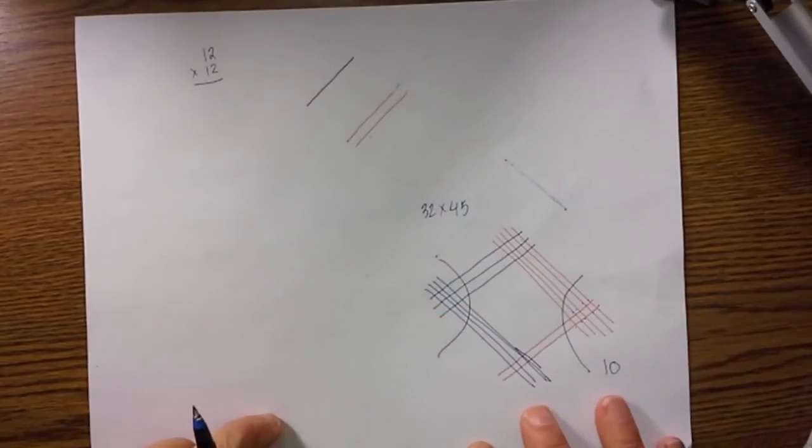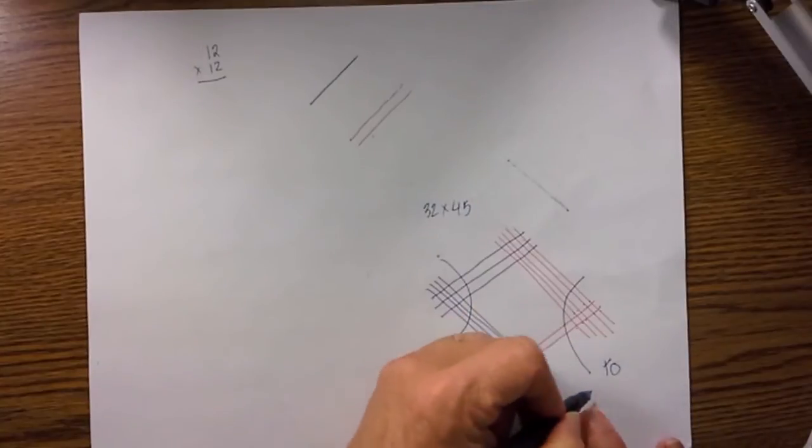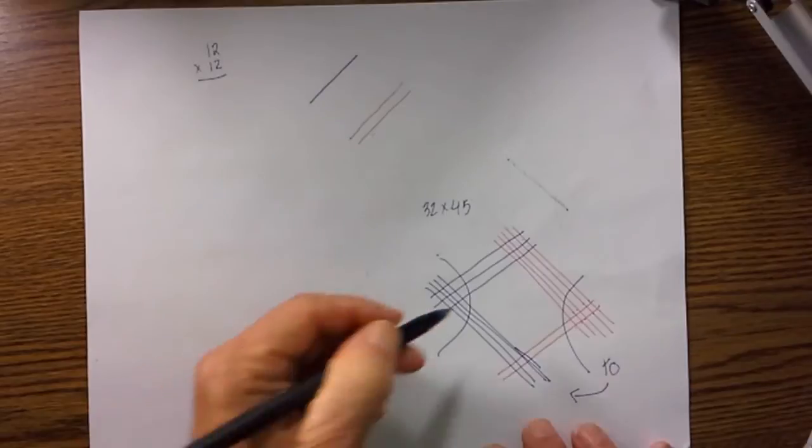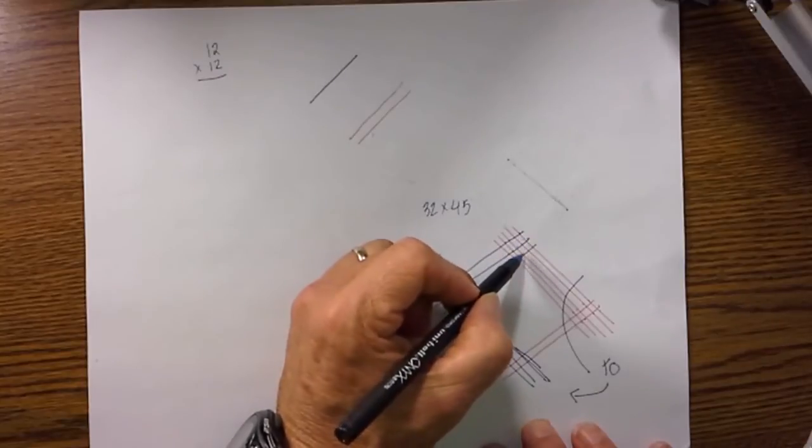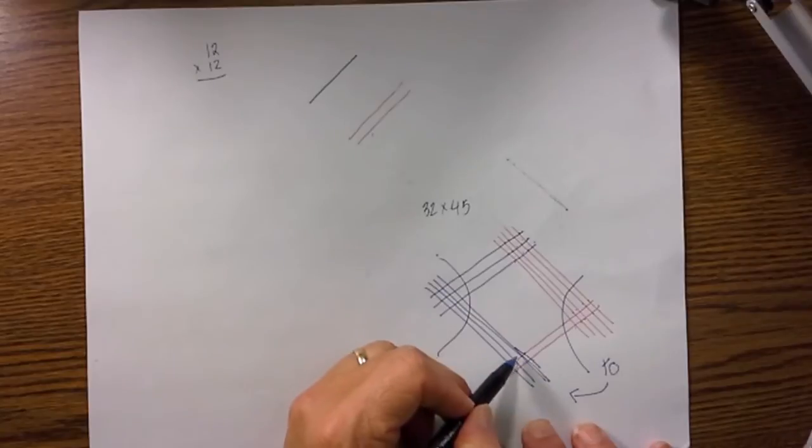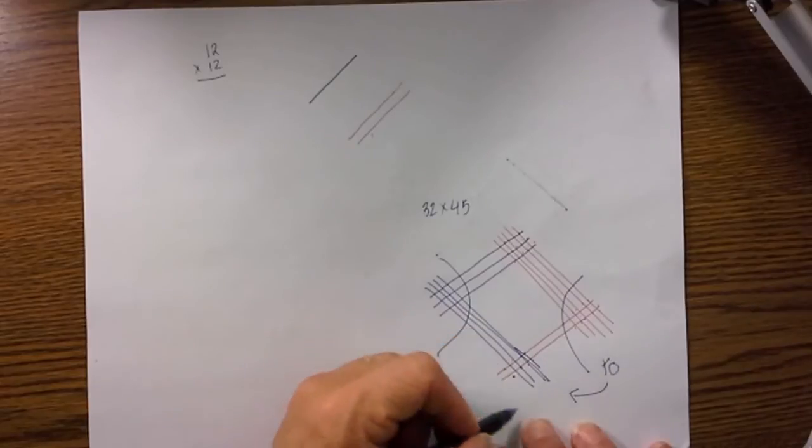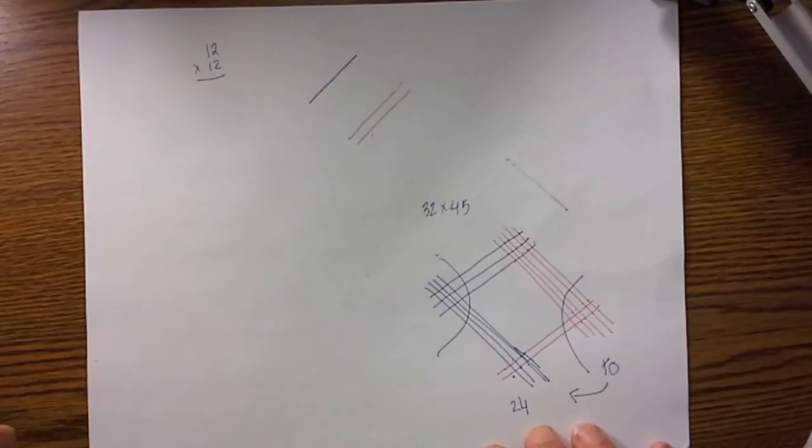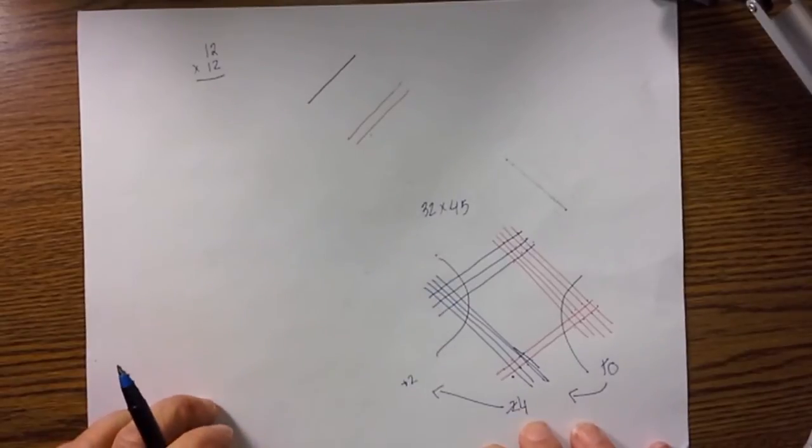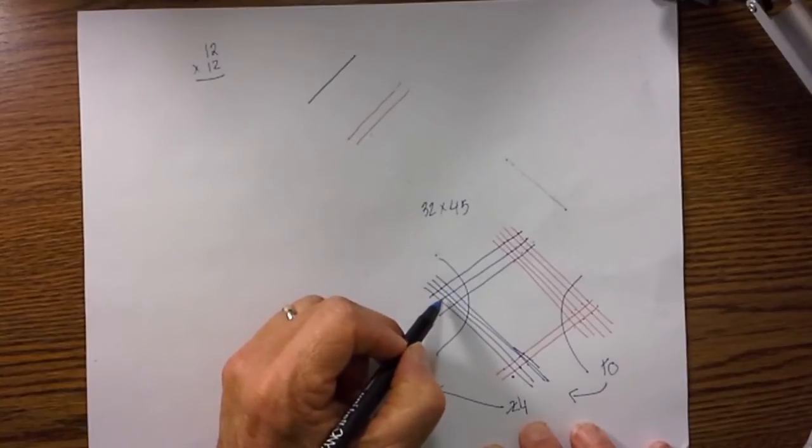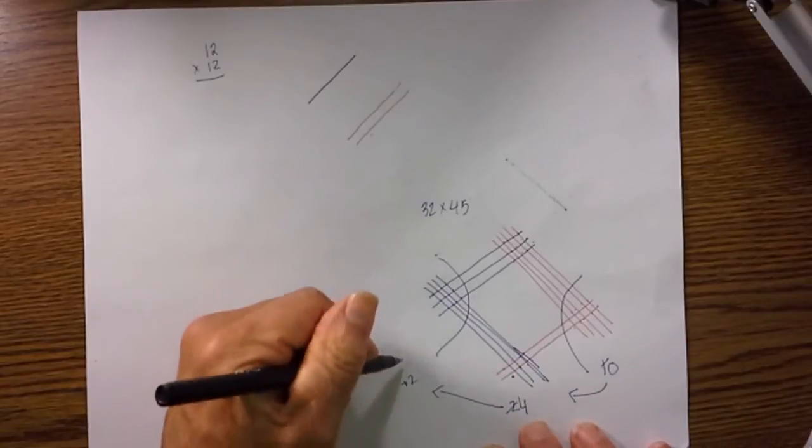So I count one, two, three, four, five, six, seven, eight, nine, ten. Now I can't have a ten in the final answer, so I'm going to move one of the tens over to this middle. I then start counting these: one, two, three, four, five, six, seven, eight, nine, ten, eleven, twelve, thirteen, fourteen, fifteen, sixteen, seventeen, eighteen, nineteen, twenty, twenty-one, twenty-two, twenty-three, plus the one is twenty-four.